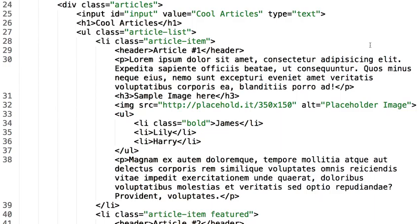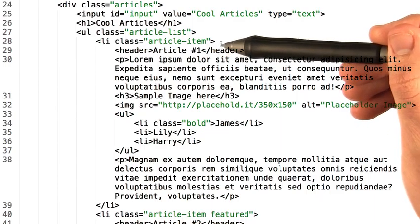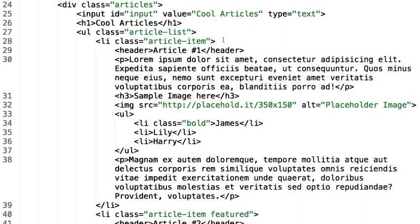For this quiz, you'll be working with the sample page again. I want you to select all elements of the class article-item and save them to variable articles. Once again, you can check your work by console.logging the resulting jQuery collection.